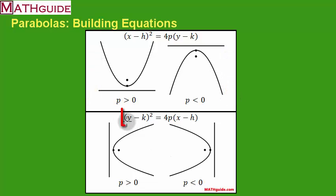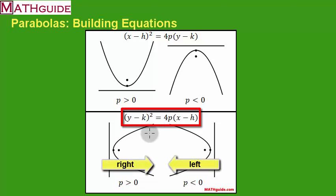Conversely, if we're dealing with the y that's being squared instead, this is a different variety of parabola, and this parabola is open either right or left. If the coefficient is positive, it's open right. If the coefficient is negative, it's open left.